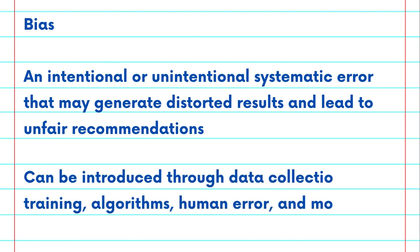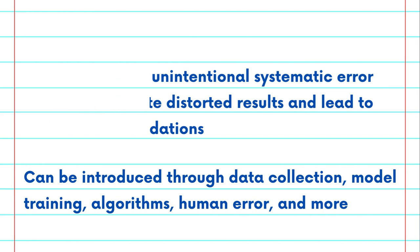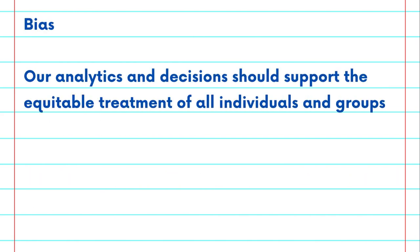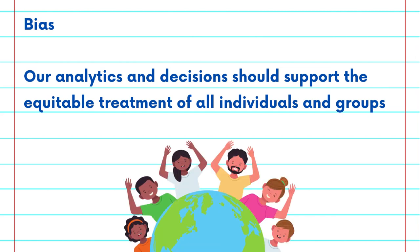Bias can be introduced through data collection, model training, algorithms, human error, and more. We want to ensure that our analytics and decisions support the equitable treatment of all individuals and groups, all while assisting us in solving our chosen problem statement accurately.